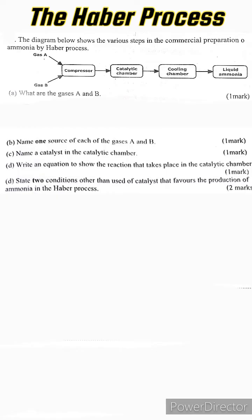Question number one: The diagram below shows the various steps in the commercial preparation of ammonia by the Haber Process. We can clearly see that there are two gases being fed into the compressor: gas A and gas B.